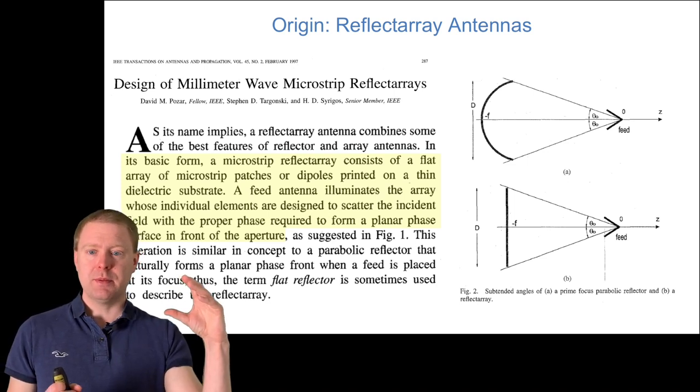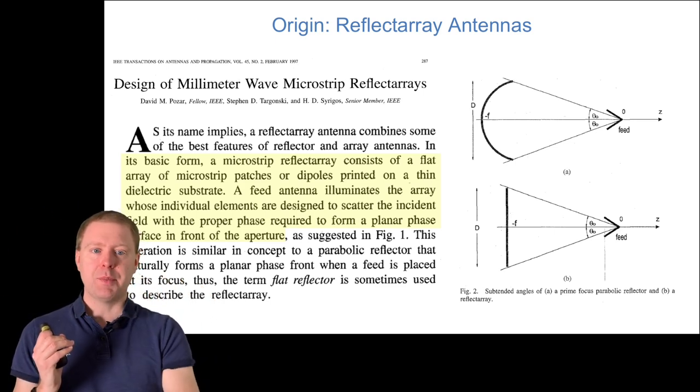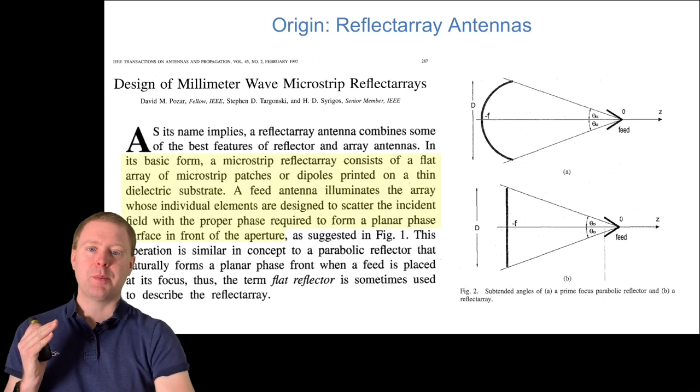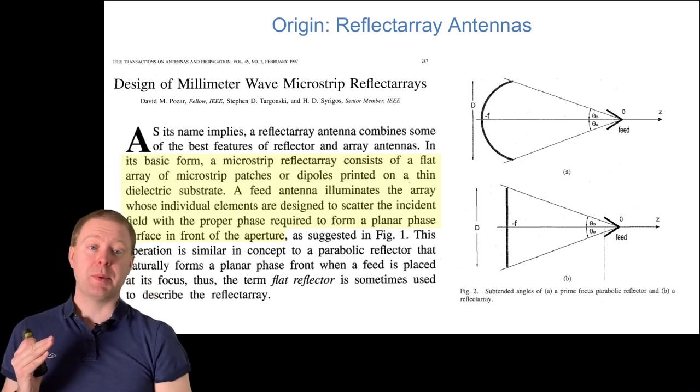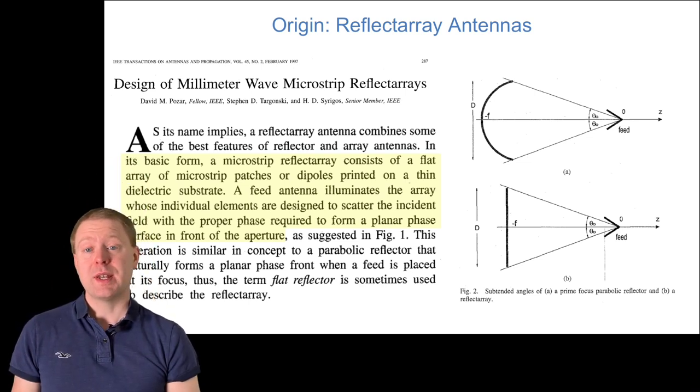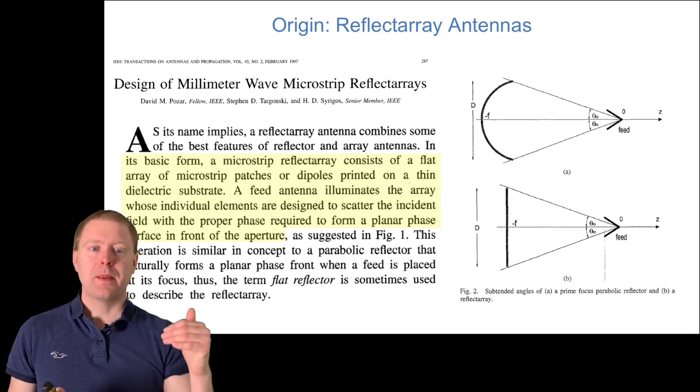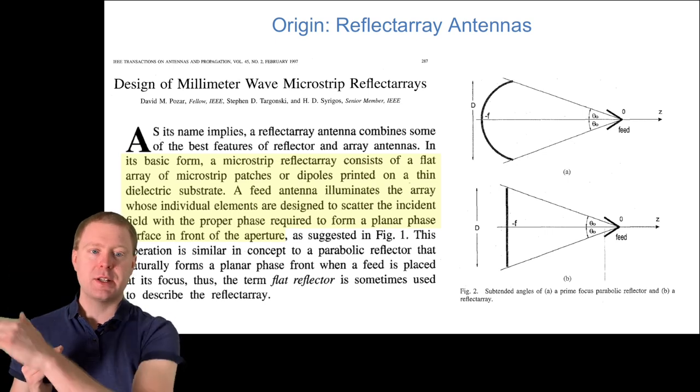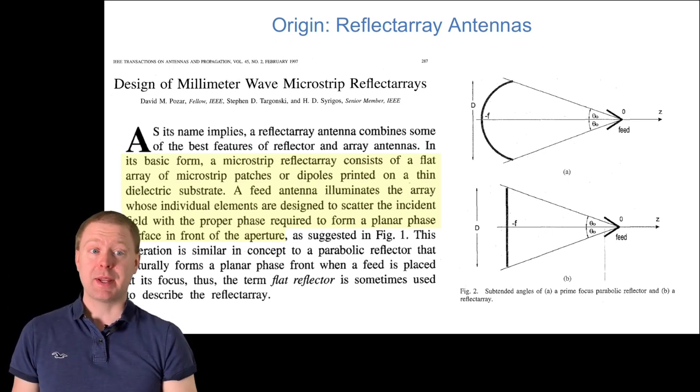What this means is you have a transmitter sending towards an aperture, and you can either design the aperture shape so it bounces off in a particular direction, as with a satellite receiver or transmitter, or you have a flat surface and control it to mimic the same thing.